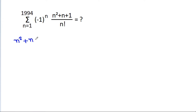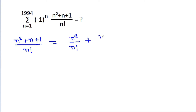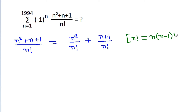(n² - n - 1) / n! can be split as n²/n! plus (n + 1)/n!, and n! equals n times (n-1)!.